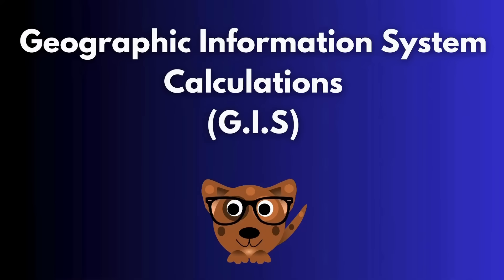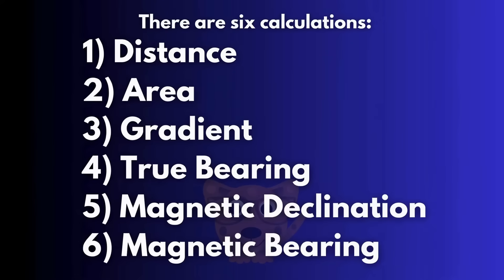You probably clicked on this video because you would like to learn more about GIS calculations. I'm not going to waste your time — let's just get straight into it. Today we will be doing six calculations: distance (straight line distance), area, gradient, true bearing, magnetic declination, and magnetic bearing.